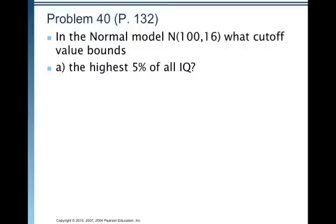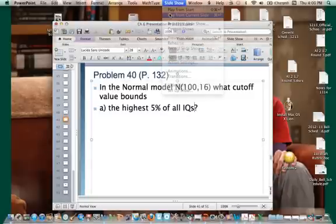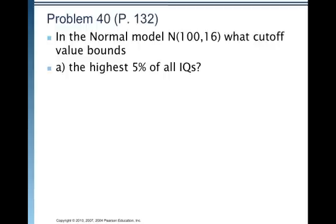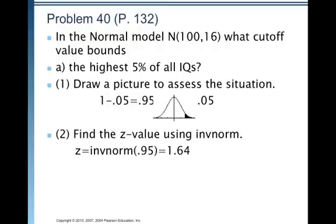So, let's apply this in our IQ problem here. In the normal model, mean of 100, standard deviation of 16, what cutoff value bounds the highest 5% of all IQs? If we're talking about the highest 5%, we're talking about the lowest 95%. We need that for inverse normal. So, draw a picture. It really helps clarify your thinking. Now, we're going to find the Z value using inverse normal. So, Z equals inverse normal of 0.95 and so we get 1.64.